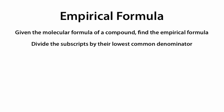For example, if we were given C₁₀H₂₂ as a molecular formula and wanted to find its empirical formula, we look at the subscripts 10 and 22 and find the lowest common denominator, which is 2. We simply divide 10 by 2 and 22 by 2 to get C₅H₁₁. C₅H₁₁ is the empirical formula of C₁₀H₂₂.